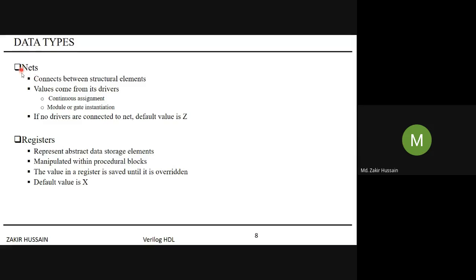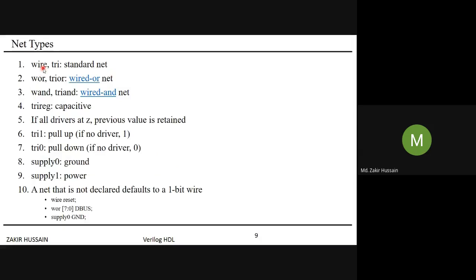The net data type has a default value of Z. When declaring a net data type, the keywords include wire, tri, triand, wor (wired-OR), and wand (wired-AND). The 'wor' keyword functions like wired-OR logic.